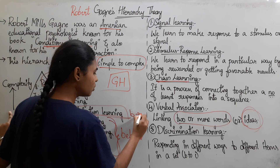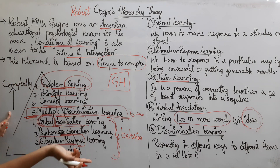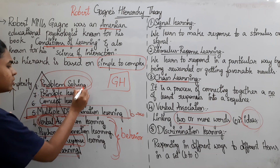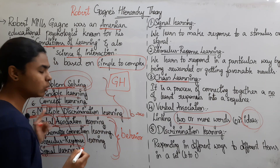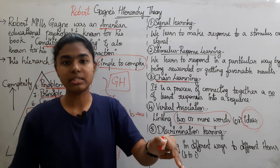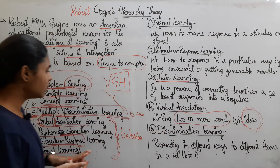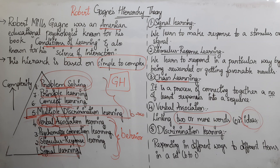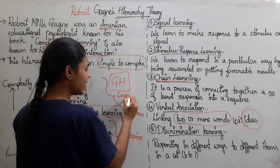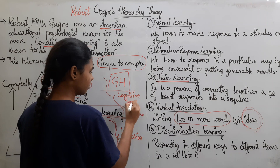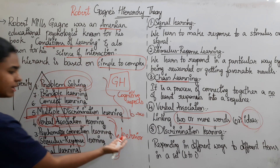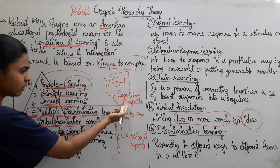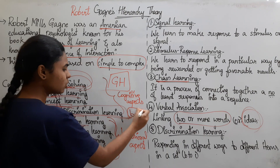From the fifth stage onward, we shift from behavioral aspects to cognitive aspects. The first four stages — Signal, Stimulus-Response, Chaining, and Verbal Association — are behavioral in nature. The next four stages — Multiple Discrimination, Concept Learning, Principle Learning, and Problem Solving — are cognitive in nature.